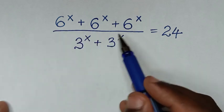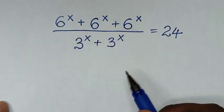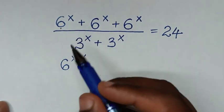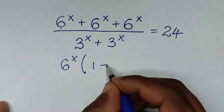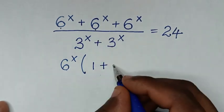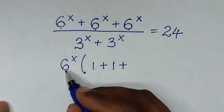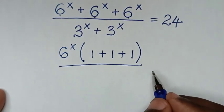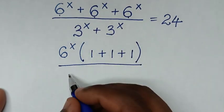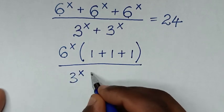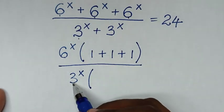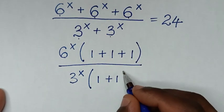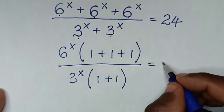Now in the numerator 6 power x is common, so we'll take 6 power x out of the bracket. Then each 6 power x divided by 6 power x is 1, giving 1 plus 1 plus 1 in the bracket. In the denominator, 3 power x is common, so we take 3 power x out of the bracket, giving 1 plus 1 in the bracket, all equal to 24.